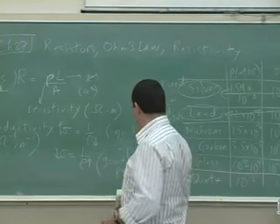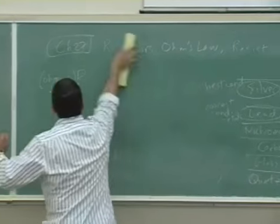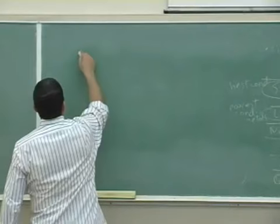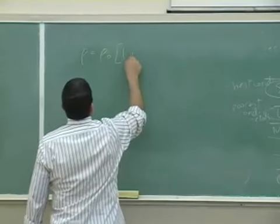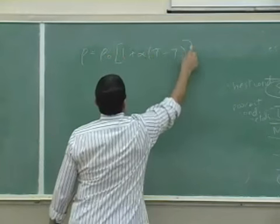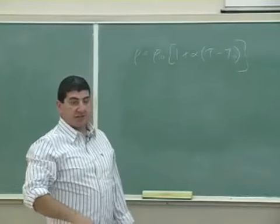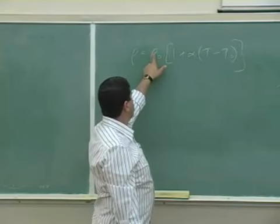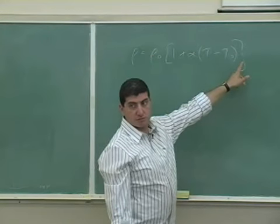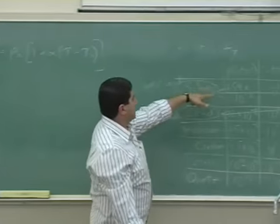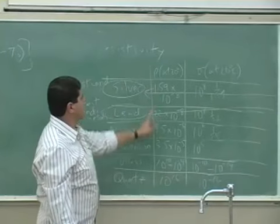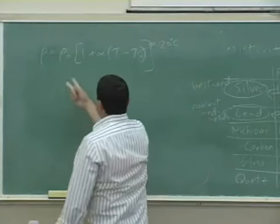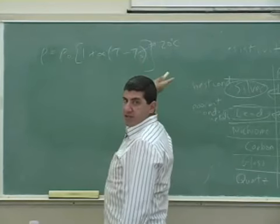Okay, so the resistivity is equal to, so the resistivity of a material is equal to the resistivity zero. What that means is, it's the resistivity at the temperature T0. So since the table gives us the resistivity at 20 Celsius, we can use T0 as 20, and then the resistivity will be whatever the table is giving us.